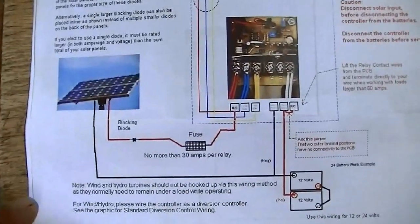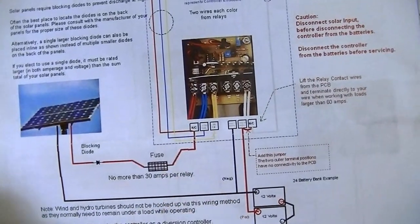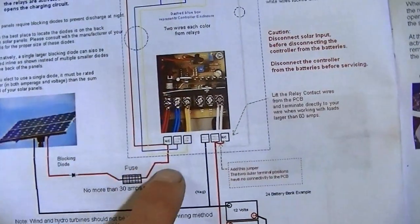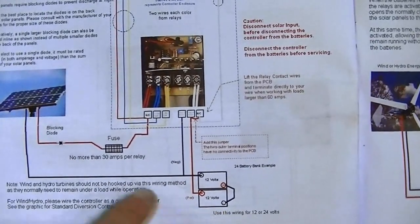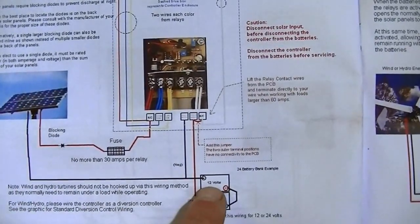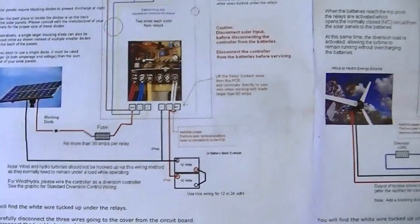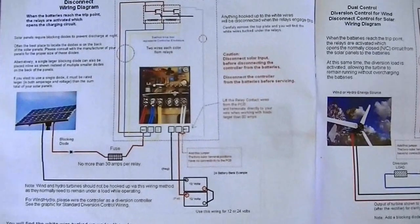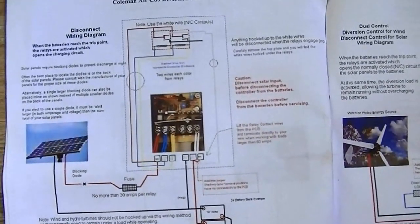Your positive wire will come over to the far left terminal. It goes through the system through a relay and then over to the battery. The negative goes straight to the battery and then back to the charge controller. When the batteries are full, it basically just disconnects. There's no harm in disconnecting solar as opposed to wind and hydro.